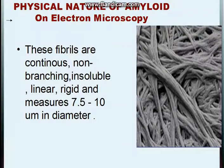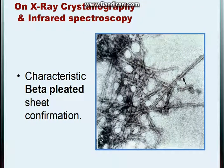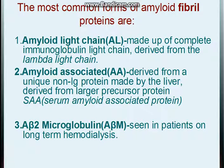Regarding the physical nature of amyloid on electron microscopy: these fibrils are continuous, non-branching, straight, insoluble, and linear rigid fibers. The diameter is 7.5 to 10 nanometers. On x-ray crystallography or infrared spectroscopy, there is a characteristic beta-pleated sheet conformation of amyloid.